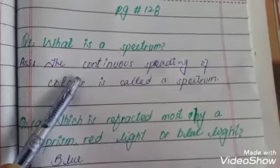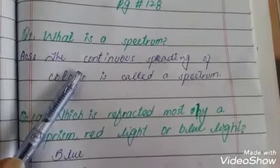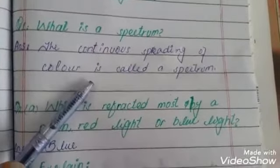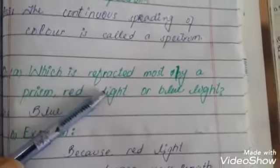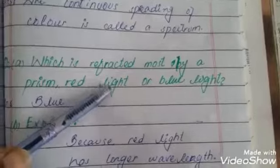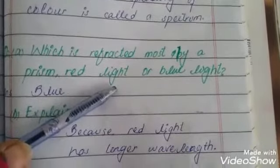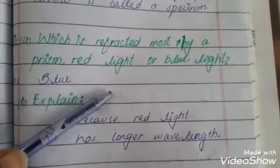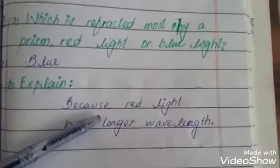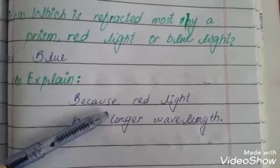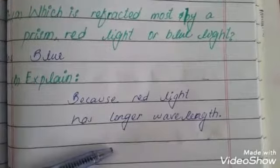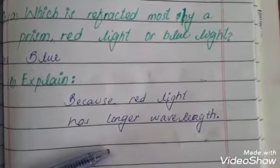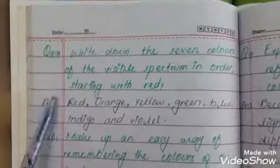Now questions on page number 128. What is a spectrum? The continuous spreading of colors is called spectrum. Which is affected most by a prism — red light or blue light? Blue light, because red light has a larger wavelength.